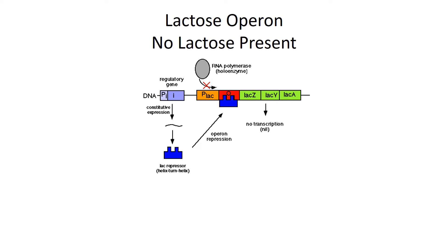First, we're going to talk about the lac operon when there's no lactose present in the environment. If there's no lactose present, the bacteria don't need to produce enzymes to break apart lactose — why make enzymes to break something apart that we don't even have available? So when no lactose is present, the structural genes are in the off position, meaning they're not being transcribed or translated.